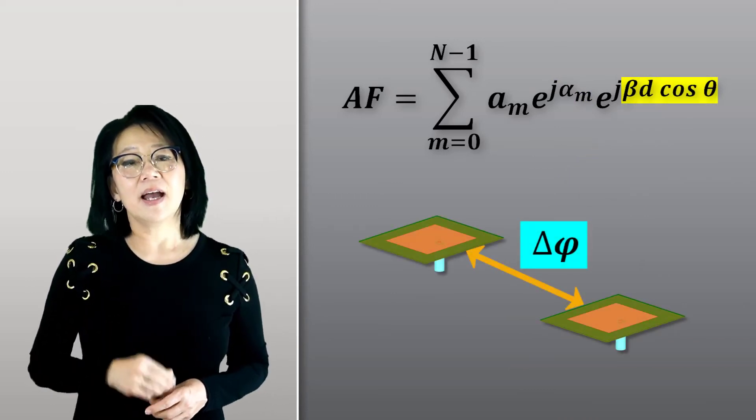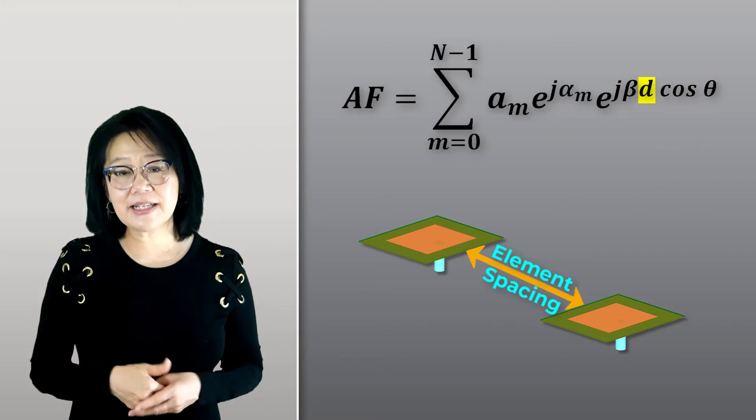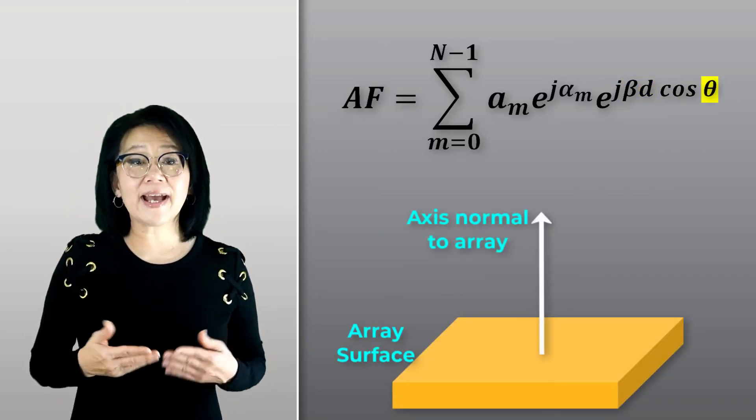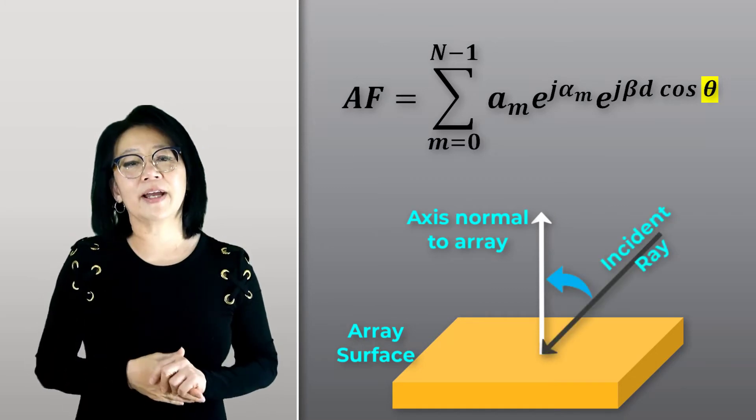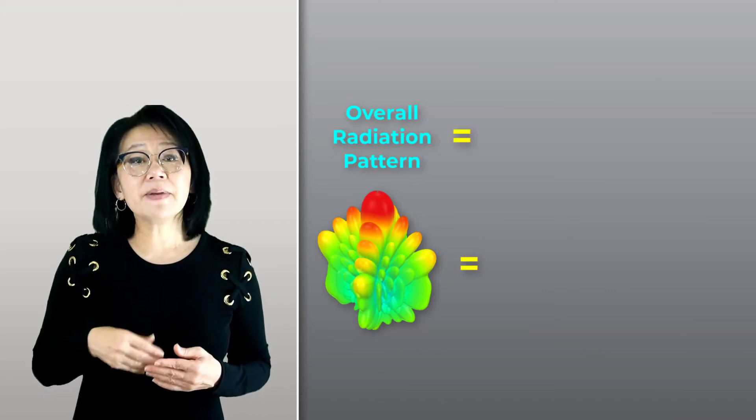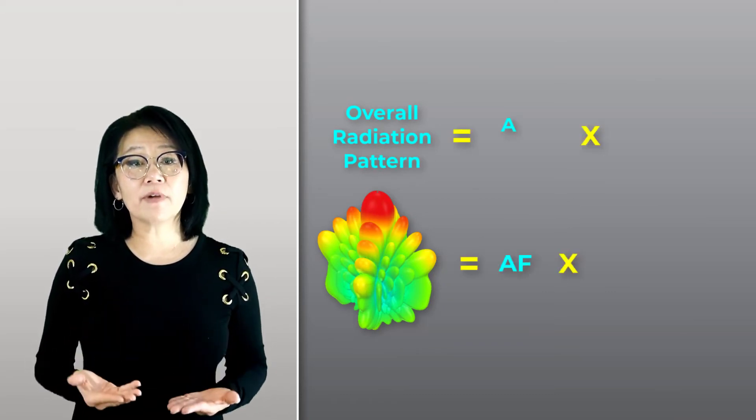d is the element spacing, and theta is the angle between the array unit axis and the incident ray. The overall antenna array radiation pattern can be calculated by multiplying the array factor with the element factor of a given antenna.